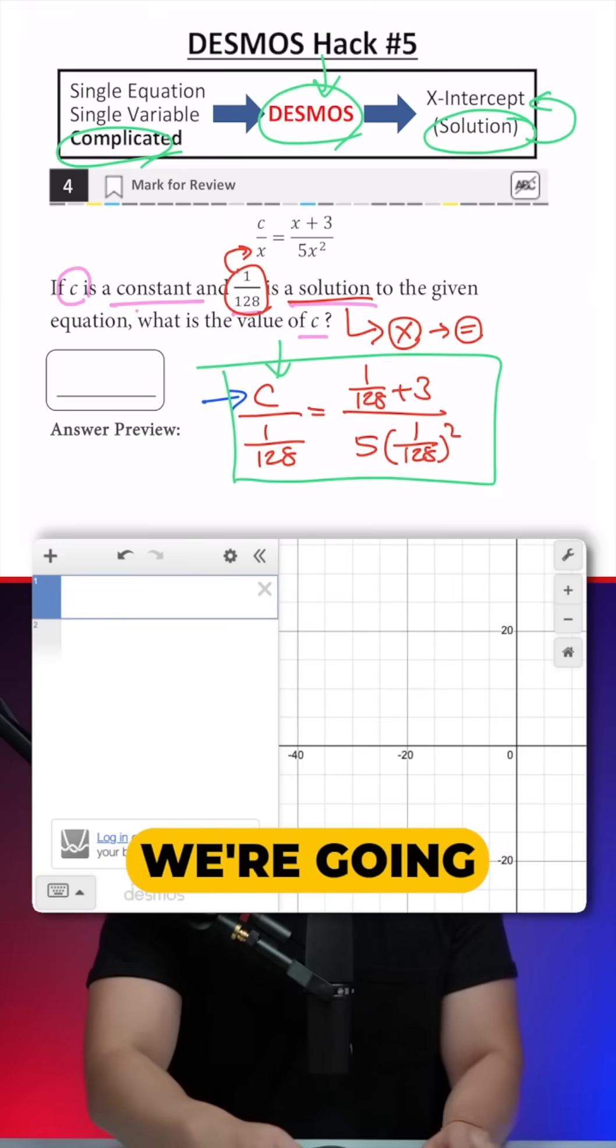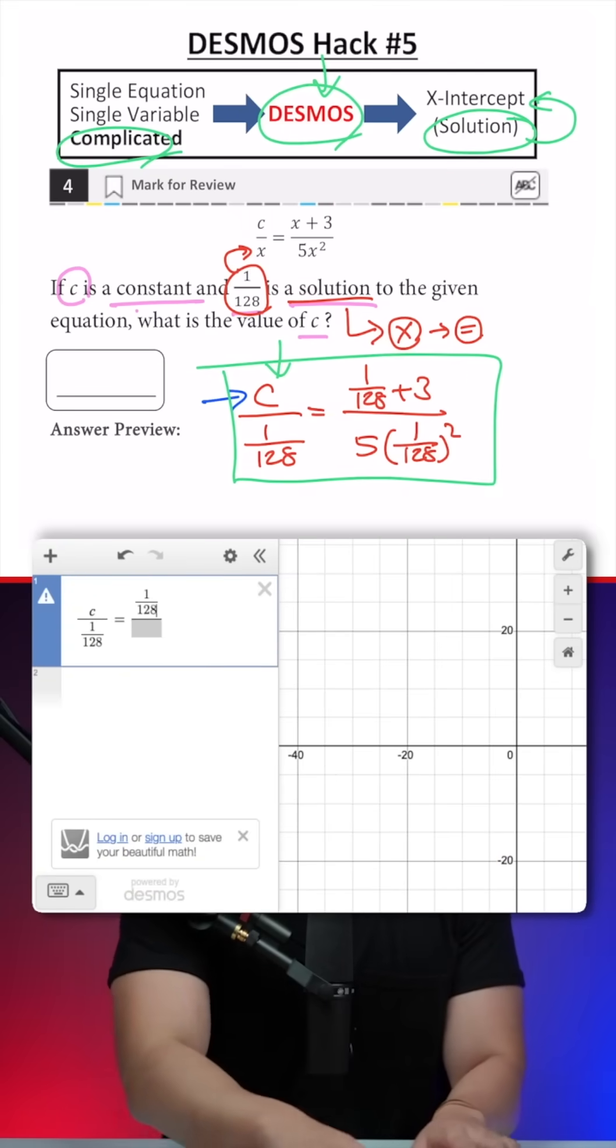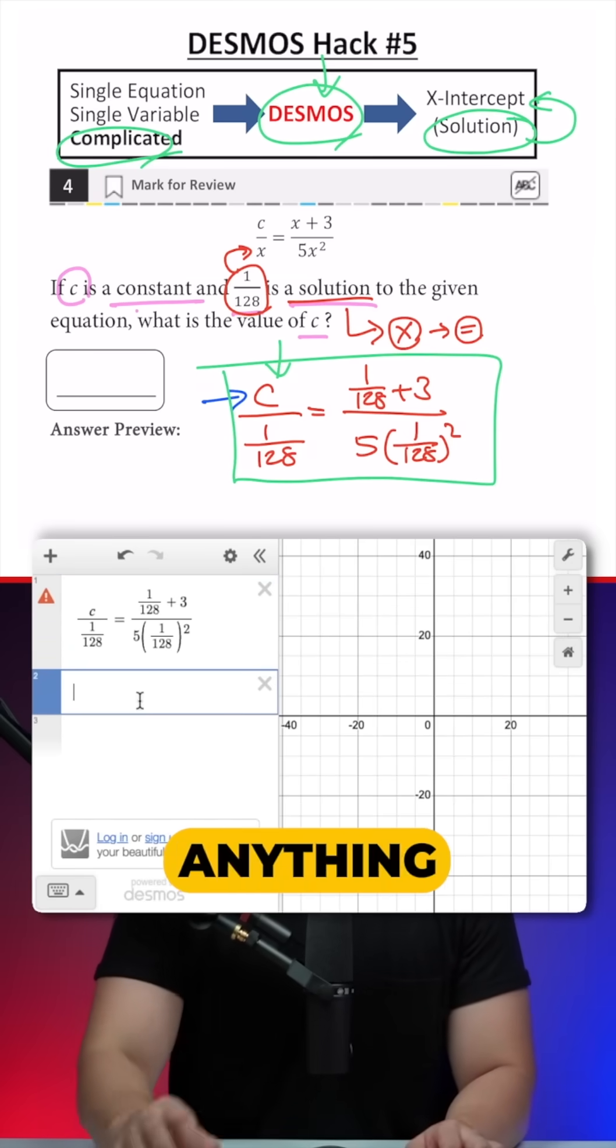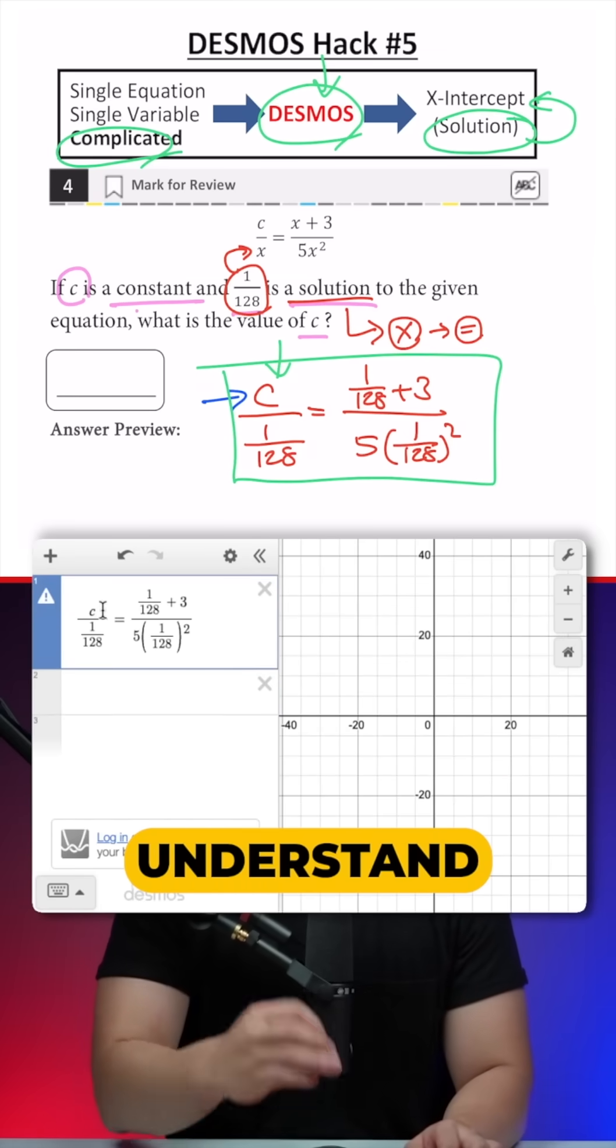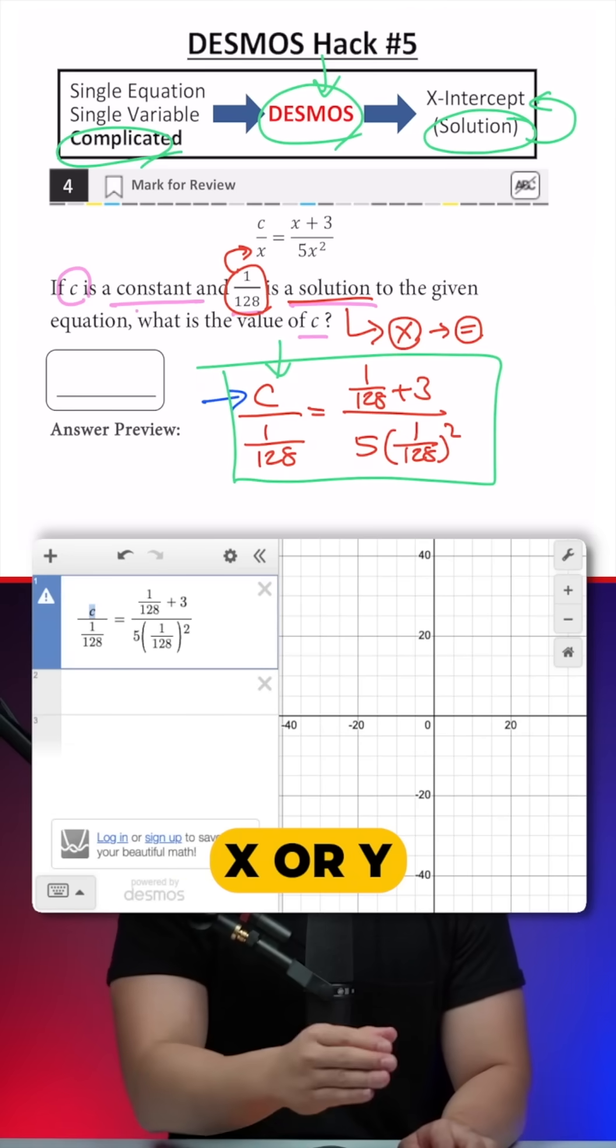So if we plug it in, we're going to get C divided by 1 over 128. If we do that, it's not going to give us anything because Desmos can only understand X or Y. So we have to swap all the other letters with X or Y.